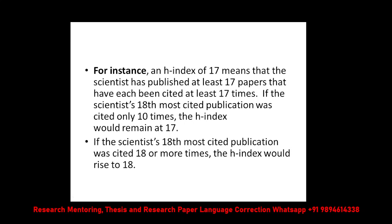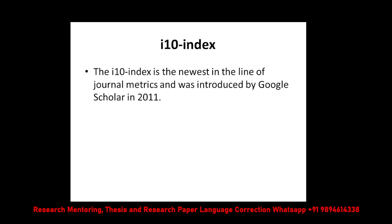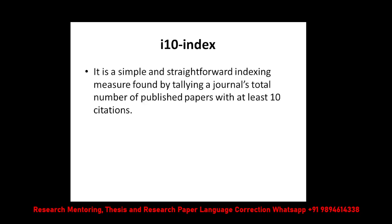I will show you my Google Scholar example for better understanding. The i10-index is very simple and straightforward, introduced by Google Scholar in 2011. If a particular paper is cited more than 10 times, you get one i10-index point. For instance, if you have 4 papers cited 23, 9, 8, and 6 times respectively, only one paper exceeds 10 citations, so your i10-index score would be only 1.